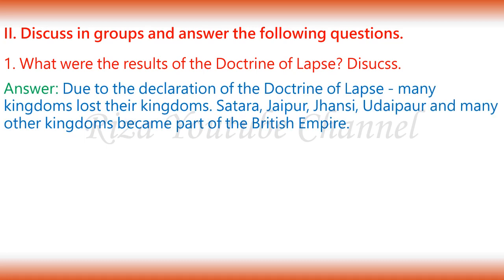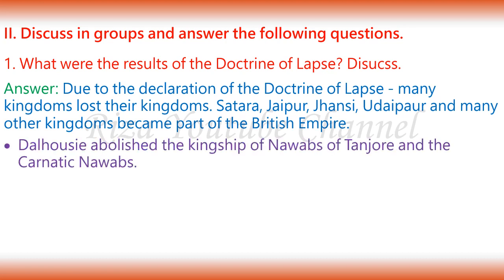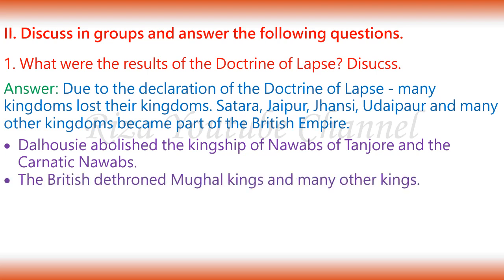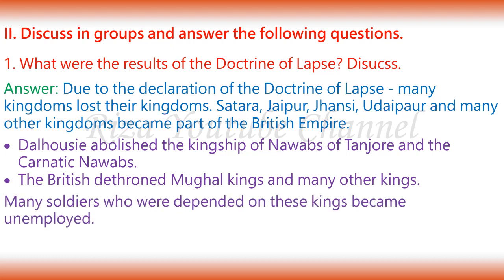Due to the declaration of the Doctrine of Lapse, many kingdoms lost their kingdoms. Satara, Jaipur, Jhansi, Udaipur and many other kingdoms became part of the British Empire. Dalhousie abolished the kingship of the Nawabs of Tanjore and the Carnatic Nawabs. The British dethroned the Mughal kings and many other kings. Many soldiers who depended on these kings became unemployed.